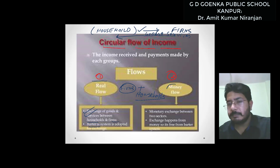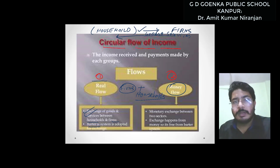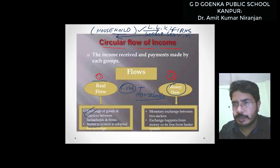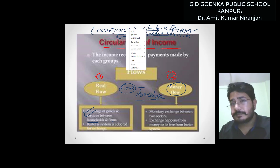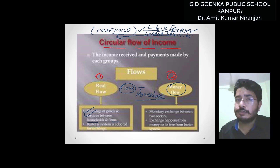Money flow means the involvement of money. If household provides factor services — like land, labor, capital, and entrepreneurship — to the firm, then in return the firm will give rent, wages, interest, and profit to the household.